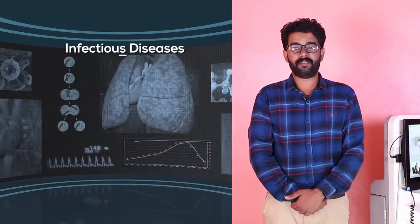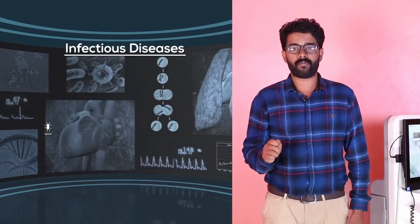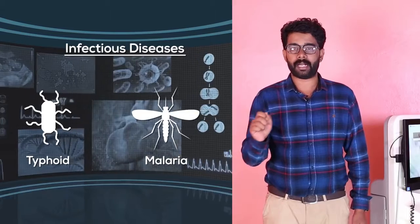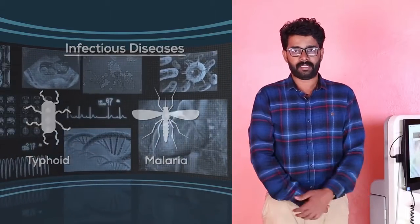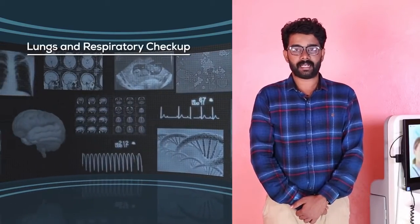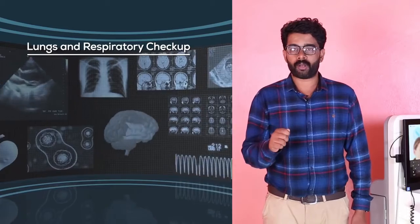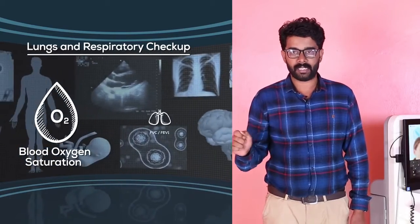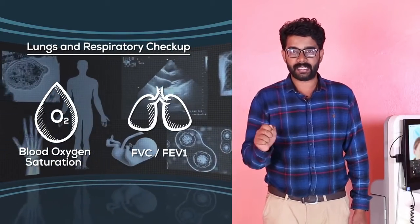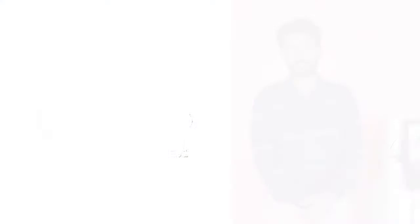The fifth is Infectious Diseases, where you can check the report of Typhoid and Malaria. The sixth is Lungs and Respiratory Checkup, where you can check Blood Oxygen Saturation, FEC, and FEV values.